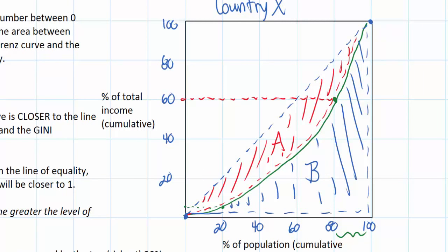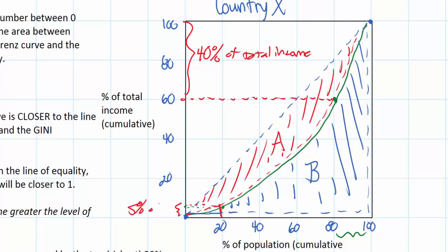I know that because the point above the 80th percentile is right at the 60% level of total income, leaving 40% of total income in the pockets of the richest 20% of society. You'll also recall that the lowest 20% of income earners take home just 5% of total income.